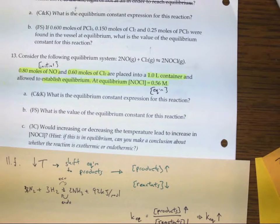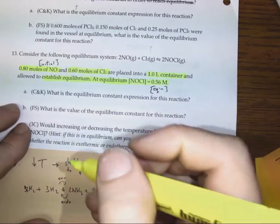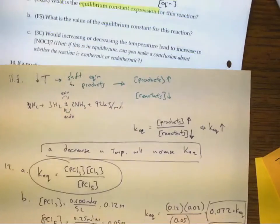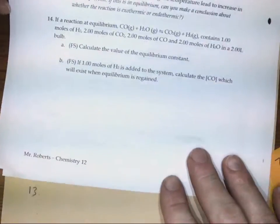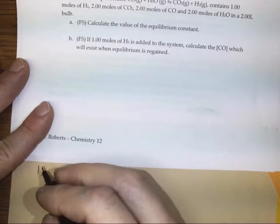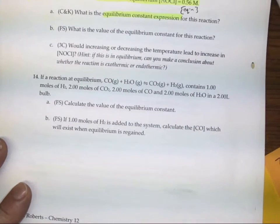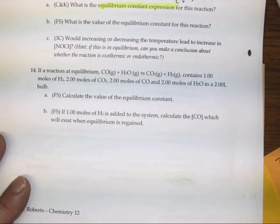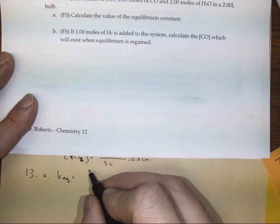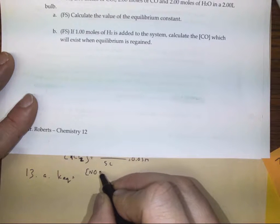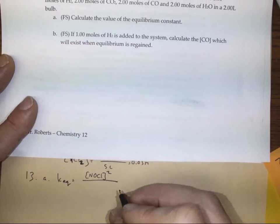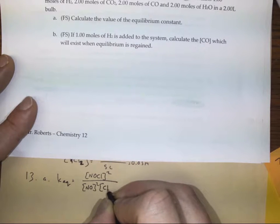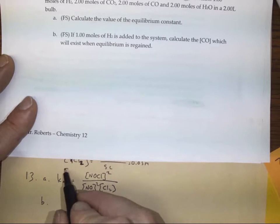But first, question 13A: what is the equilibrium constant expression? The equilibrium constant expression is the concentration of NOCl squared — because there are two of them — over the concentration of nitrogen monoxide squared times the concentration of chlorine. That's the whole answer.